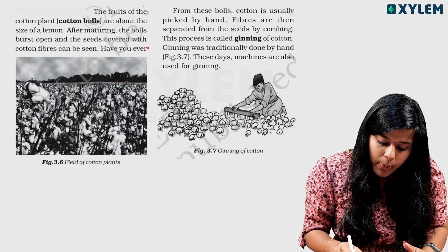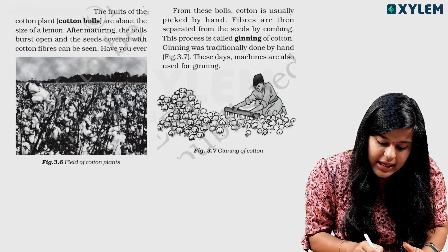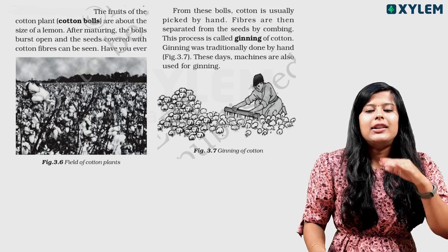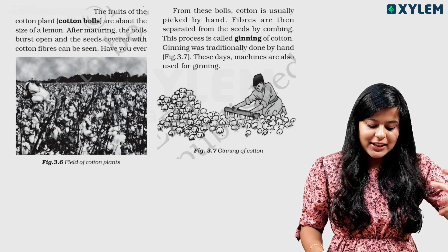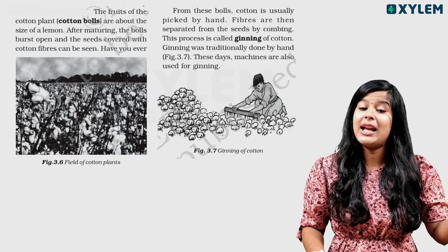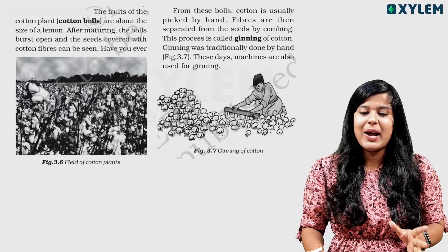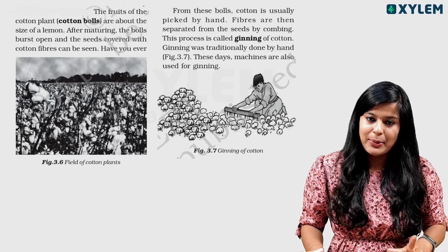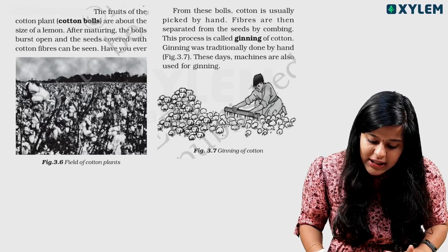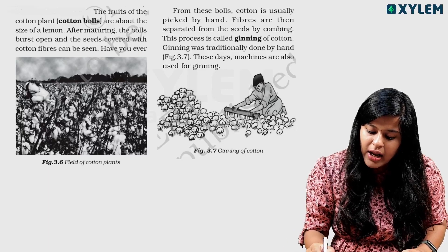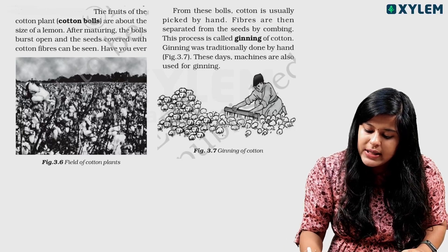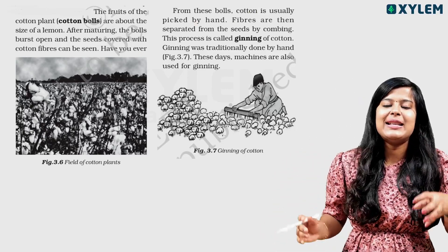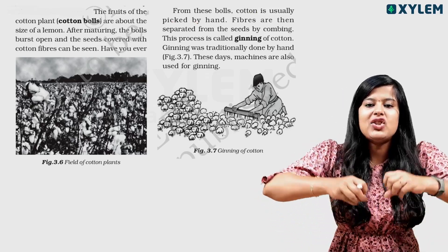After maturing, the ball bursts open and seeds covered with cotton fiber can be seen. If it is mature, it will burst open. Cotton is usually picked up by hand. We can separate it by hand.